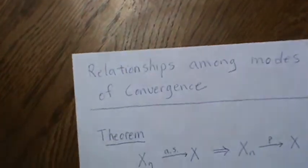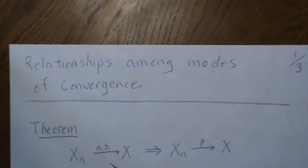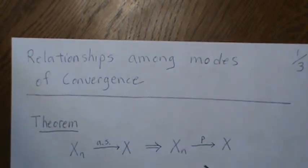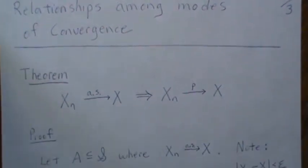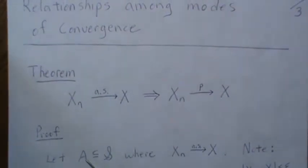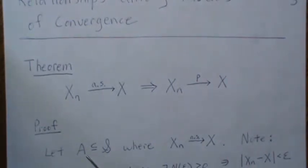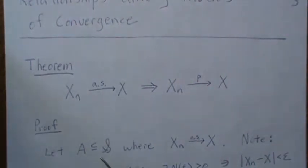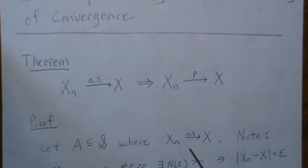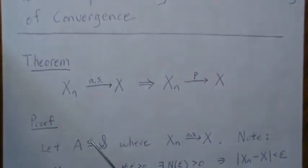So here we're going to try to show that convergence almost surely implies convergence in probability. What we do here is set up a set. So let's assume that we have a subset of our sample space where it converges almost surely. The definition of this says that it should be the entire sample space,